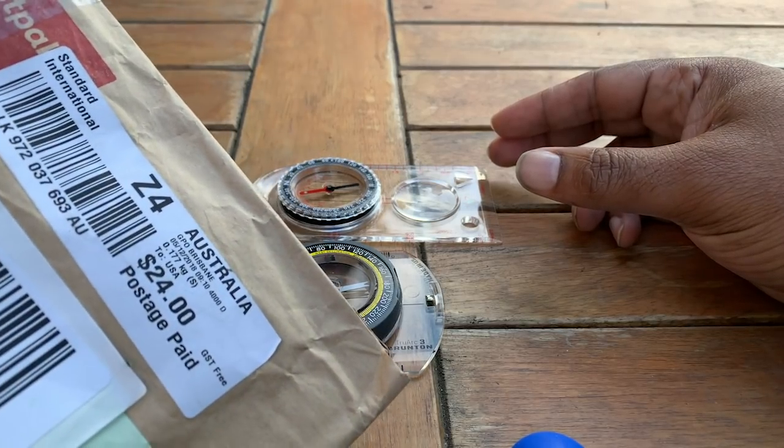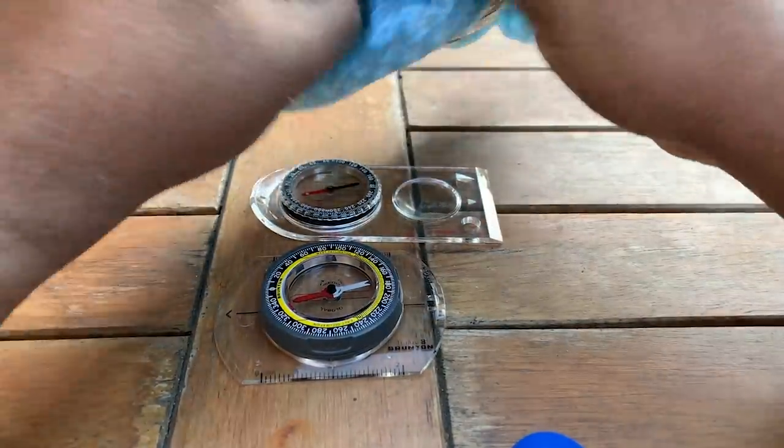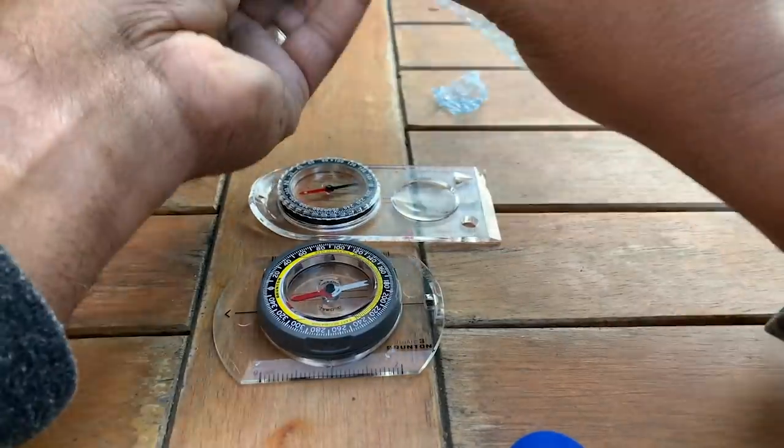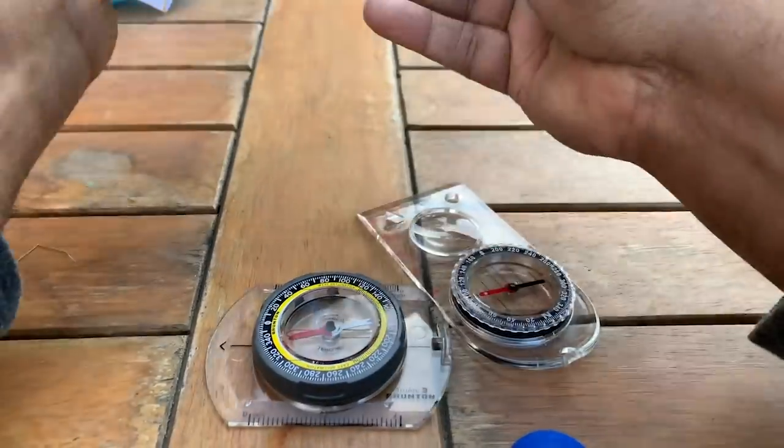Well, it took some doing, but I got a hold of an Australian region compass. They didn't want to ship it up north, so I had to get it sent to Critical Think, who then passed it on to me. Thanks, CT. Let's open this up and see what it does.